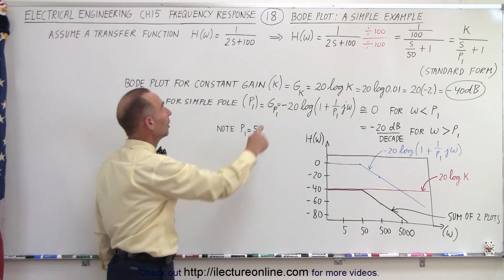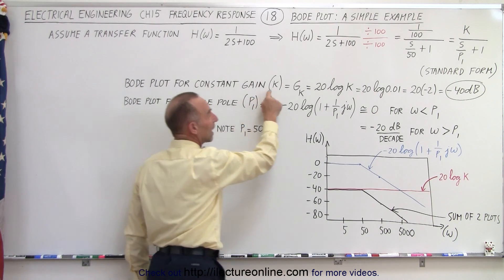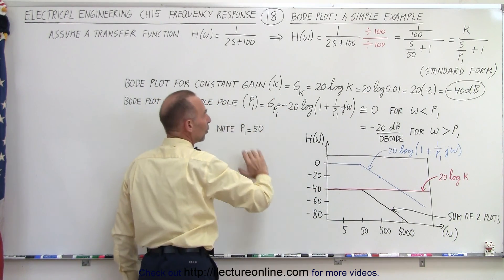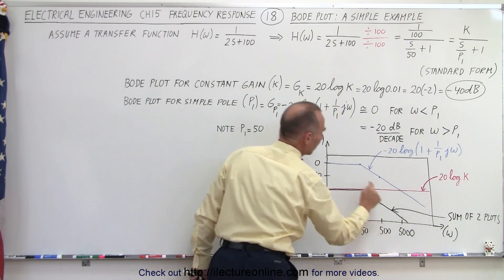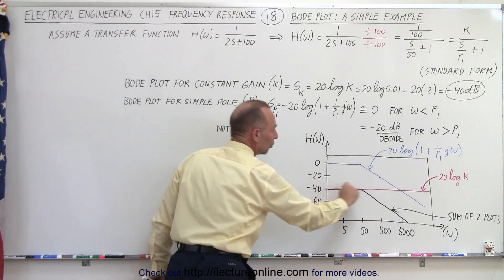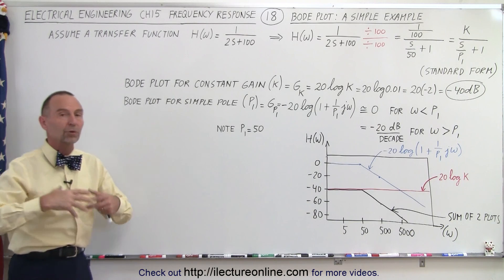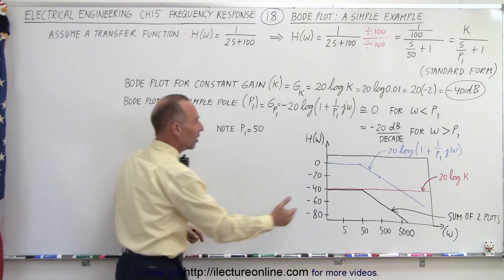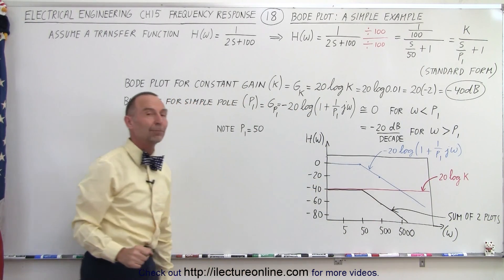In this case we have two of them the constant gain and the simple pole for the constant gain. This is what the transfer function looks like on the Bode plot. For the simple pole that's what the Bode plot looks like. So we have the constant gain. We have the pole one. We combine the two and the black line represents the Bode plot of the two combined which is what we're ultimately looking for. And so the Bode plot representation of this transfer function is represented by that black line.